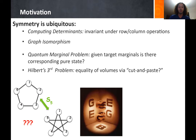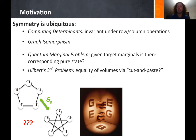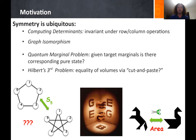Another problem where invariants arise is Hilbert's third problem: given two polyhedra in three dimensions of equal volume, is it possible to cut one and paste it together to transform it into the other? The answer is no — this was solved by Max Dehn via the Dehn invariant. By contrast, for two polygons of equal area in two dimensions, it is possible to cut and paste one into the other.